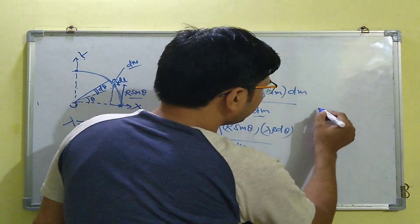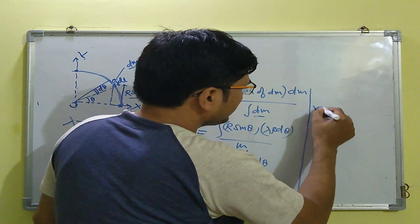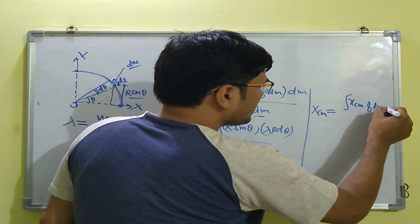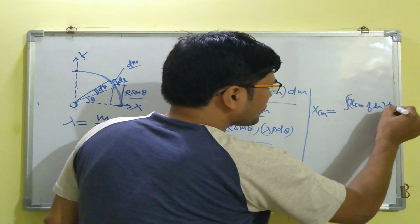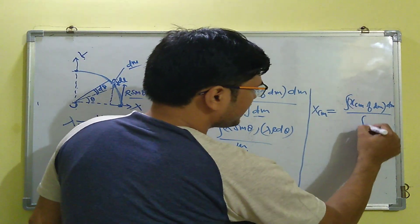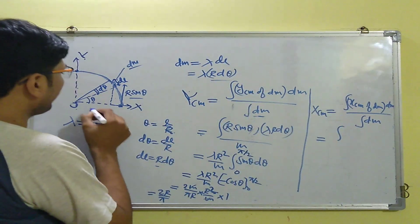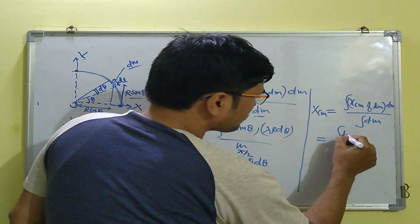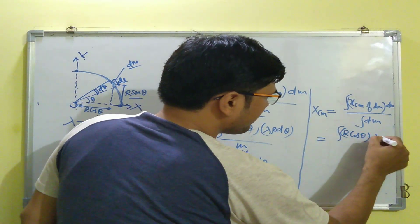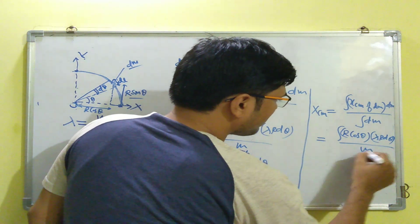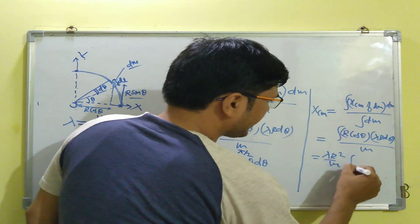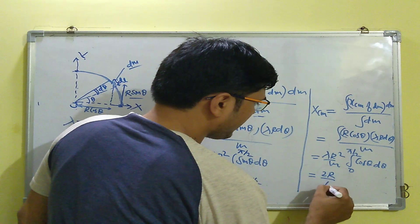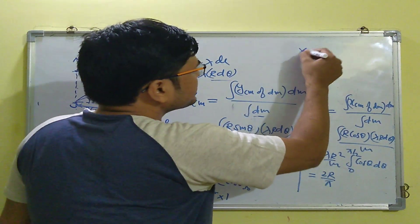For x_cm, by the definition of center of mass for a continuous body, x_cm = (∫ x·dm) / (∫ dm). The x-coordinate of the differential element is r·cosθ, so we get λr²/m · ∫ cosθ·dθ from 0 to π/2, which gives the same result: x_cm = 2r/π.